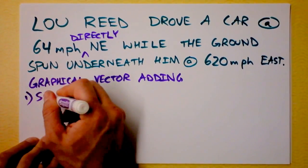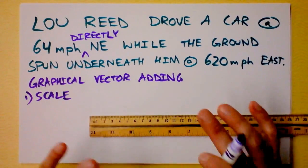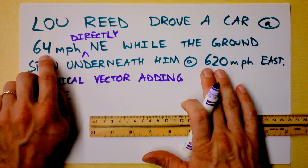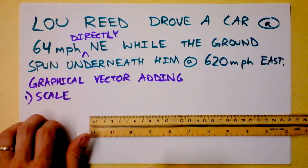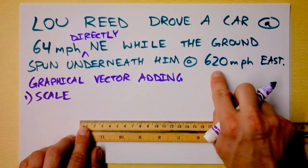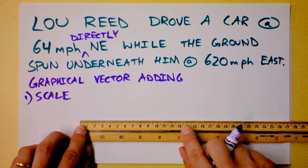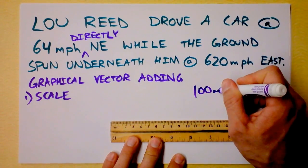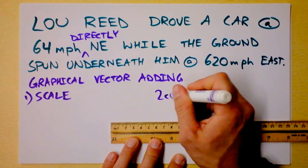We need to establish a scale — something that can fit on our piece of paper or blackboard. I need to look at these two numbers and find something I could use as a scale that will fit comfortably. I need to get 620 miles per hour to the east. Could 100 miles per hour be one centimeter? That vector would be very, very short, so maybe I could double that. I'll say that 100 miles per hour is represented by 2 centimeters.